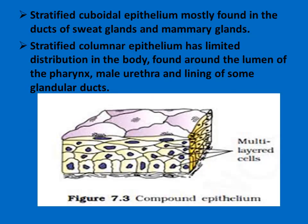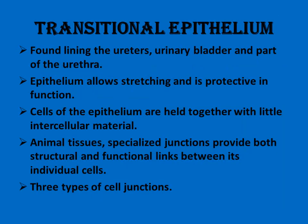Cuboidal or columnar cells specialized for secretion are called glandular epithelium. There are two types: unicellular, consisting of isolated glandular cells such as goblet cells of the alimentary canal. This is an example of endocrine, and this is an example of exocrine glandular epithelium.